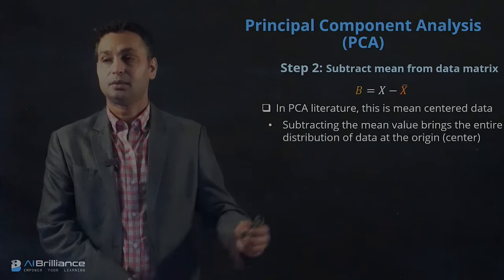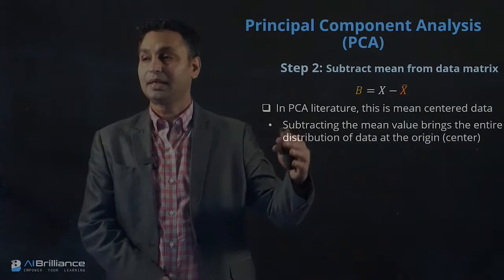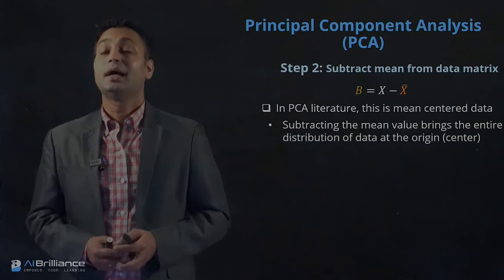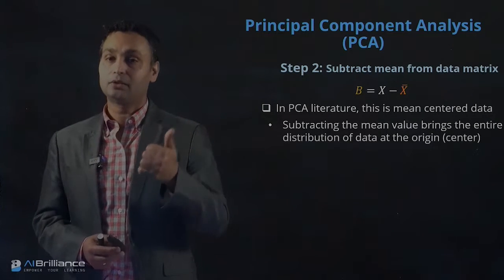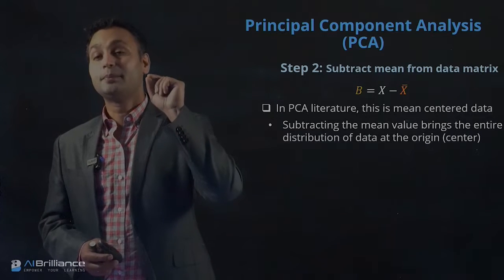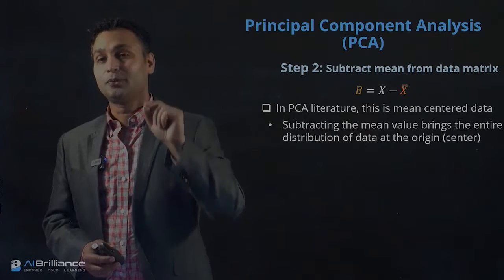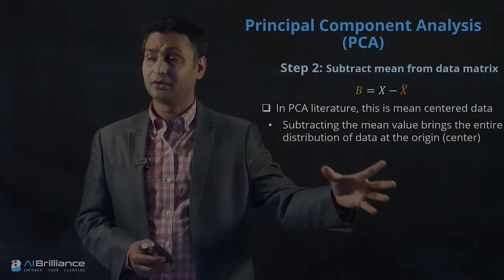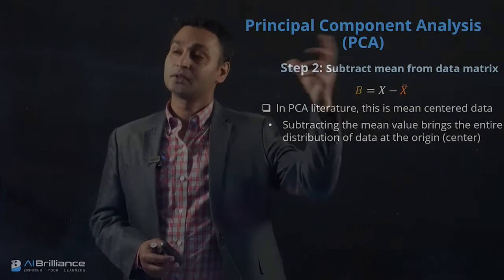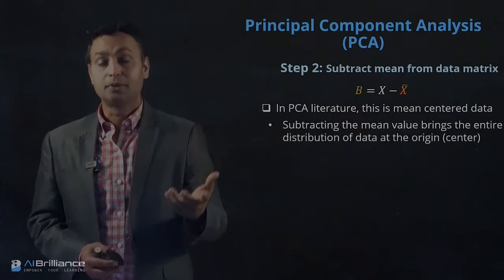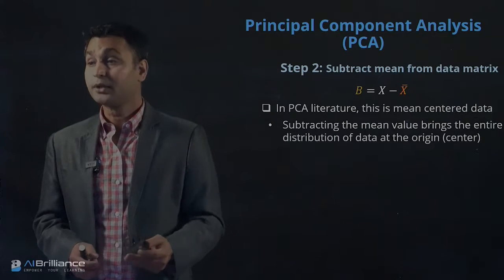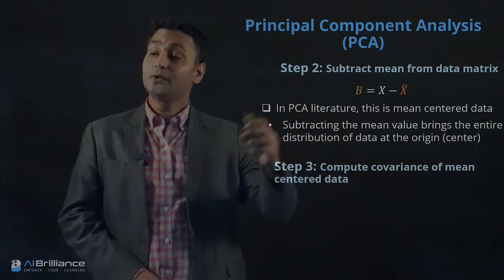Subtracting the mean value brings the entire distribution of data to the origin. If you recall the diagram, the location of the U and V axes was at the mean-centered point of the data. Computing B is essentially the algorithmic way of correlating with that geometrical aspect mentioned previously.